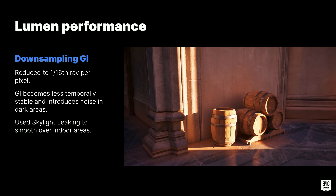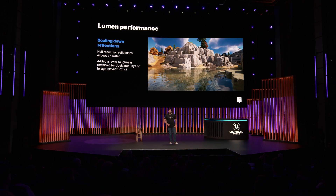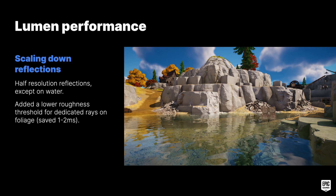Paul showed earlier how skylight leaking was added to help illuminate darker areas — this also helped hide GI noise in dark indoor locations. Another sacrifice for 60 fps was scaling down the quality of reflections to half resolution except on water. We also added a separate roughness cutoff parameter for foliage, resulting in fewer dedicated reflection rays and relying more on Lumen's rough specular approximation for the shading model. The difference was not very noticeable and saved us upwards of two milliseconds.